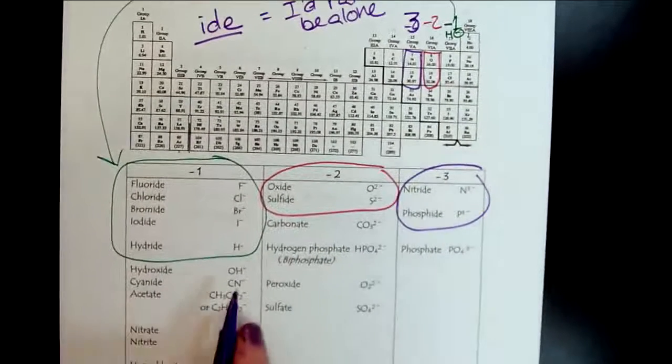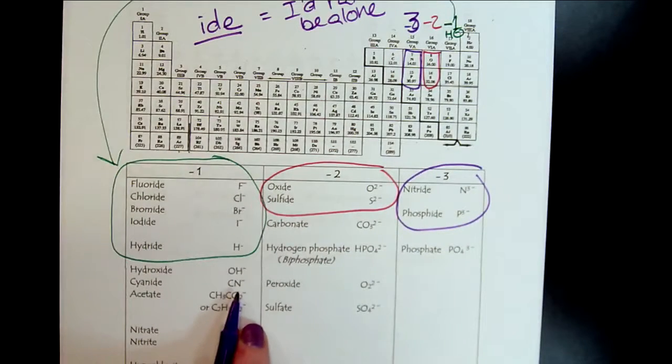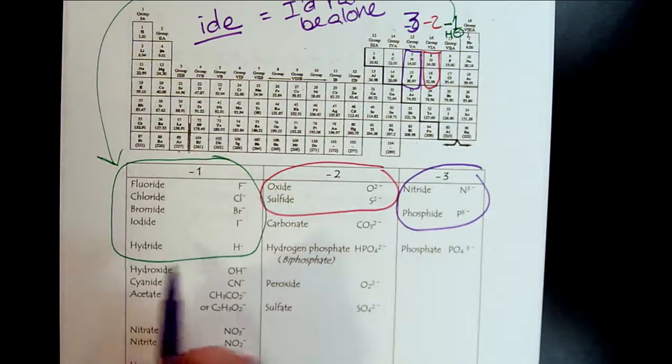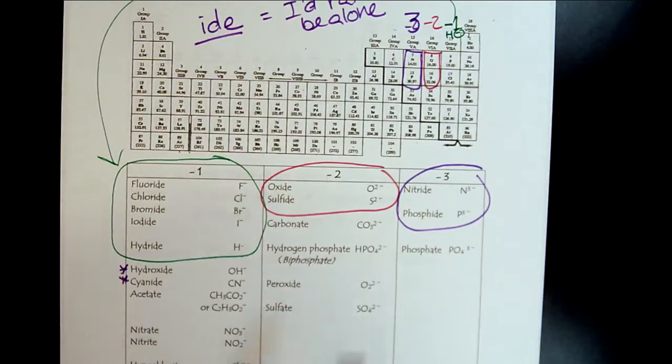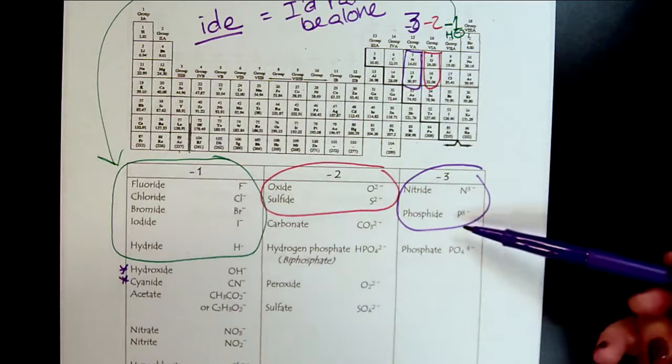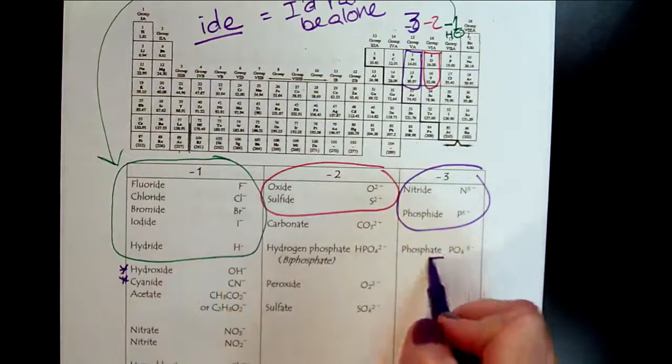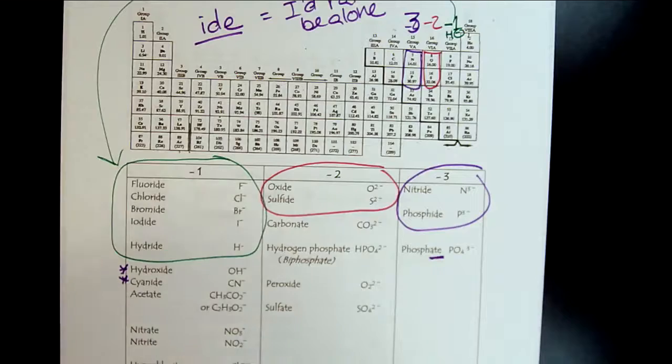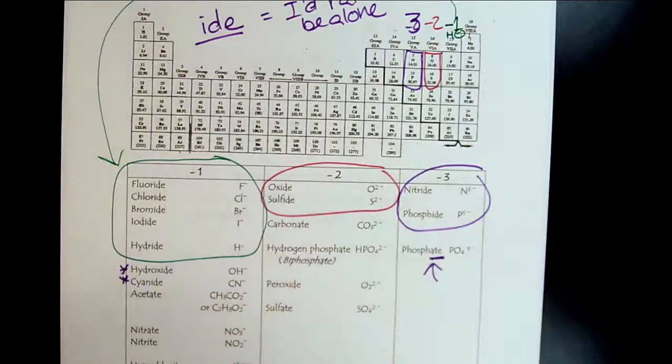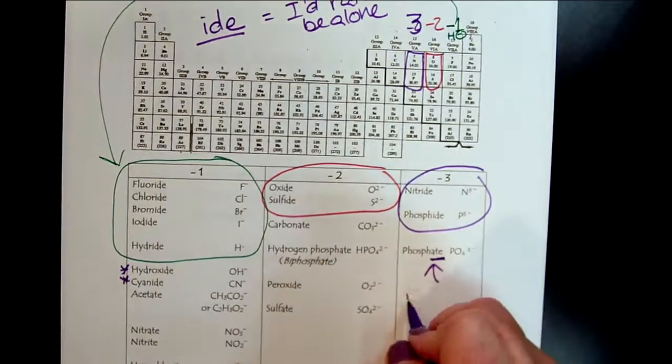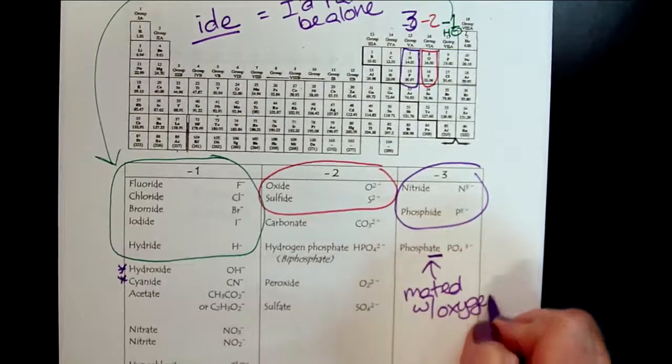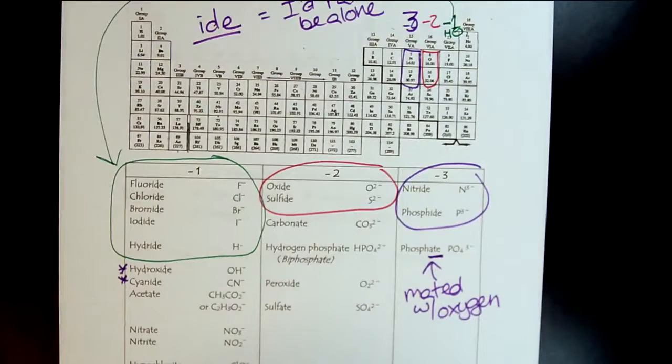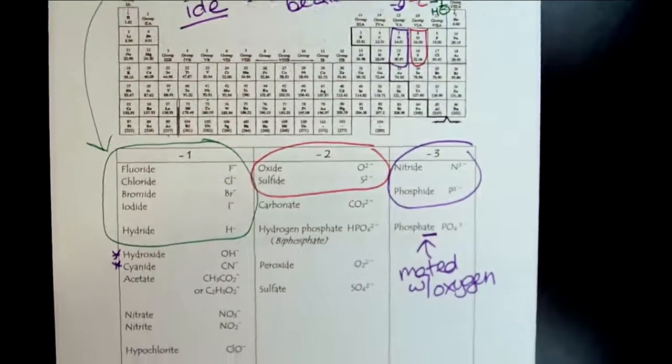Now, I know, there is hydroxide and cyanide. Those are two common ones. The I'd rather be alone doesn't work for those, but it does work for the other ones. So if we look at phosphide versus phosphate, you can think that when you see the ate, some students say it's really helpful to think that the ate is mated with oxygen. Little patterns like that can be helpful.